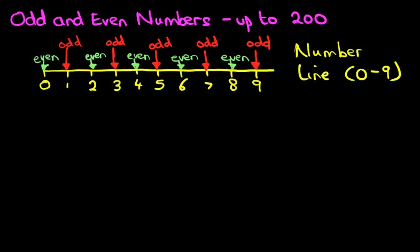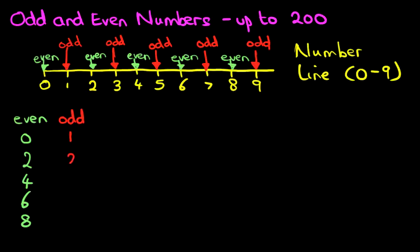Once you know this, you can work out the odd and even numbers for any number. Let's have a quick recap over here. We're going to write down all the even numbers: from the number line we've got 0 — don't forget, count in 2s — 2, 4, 6, and the last one is 8. And next to it, we're going to write down the odd numbers: 1, and then count in 2s — 3, 5, 7, 9. So there we have it — we've got all the odd and even numbers in two columns.